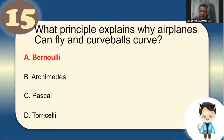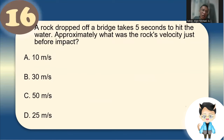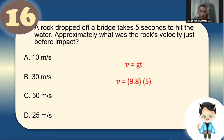Number 16: A rock dropped off a bridge takes 5 seconds to hit the water. What was the rock's velocity just before impact? Using V = gt, with g = 9.8 m/s² and t = 5 s, V ≈ 50 m/s. The answer is letter C.